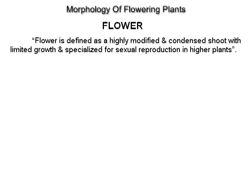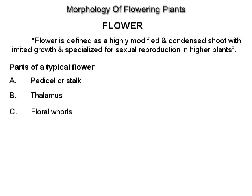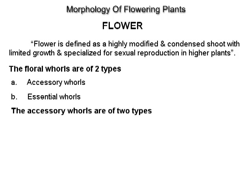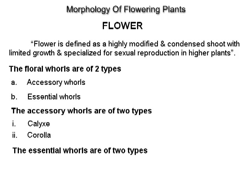Flower. A flower is defined as a highly modified and condensed shoot with limited growth and is specialized for sexual reproduction in higher plants. Parts of a typical flower: pedicel or stalk, thalamus, and floral whorls. The floral whorls are of two types: accessory whorls (calyx and corolla) and essential whorls (androecium and gynoecium).